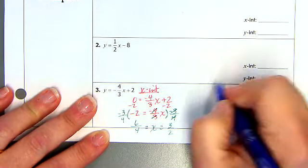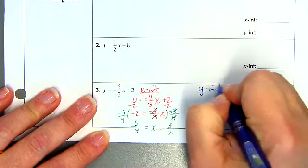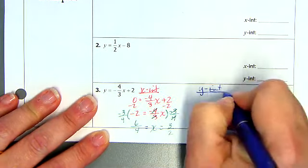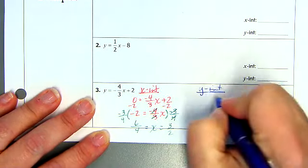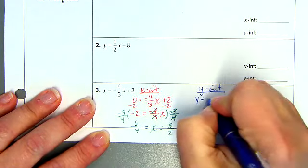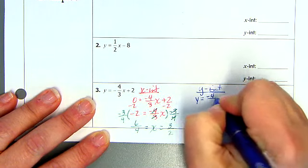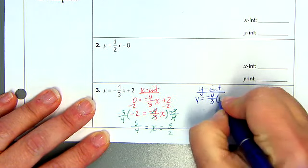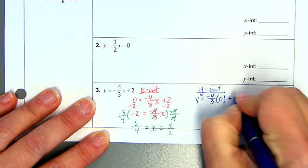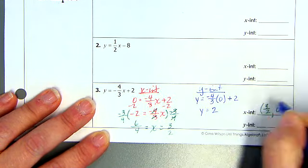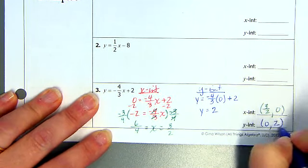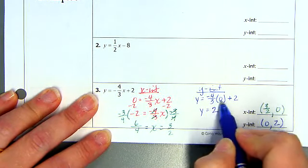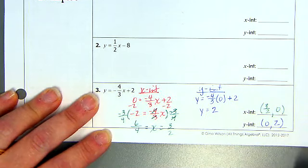Excuse me. And then the y-intercept. Again, so I'm going to have y equals negative 4 thirds times 0. And I plug in 0 for x. And we solve. So this is going to give me y equals 2. So my y-intercept is (0, 2). Because anything times 0 is 0. And then 0 plus 2 is 2.